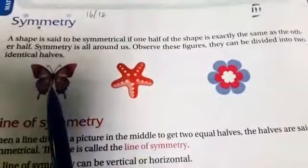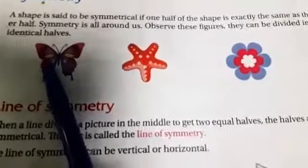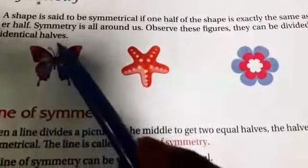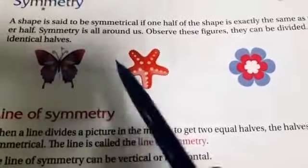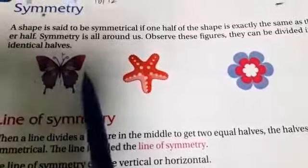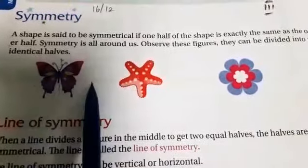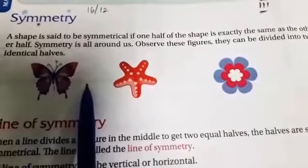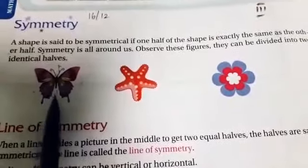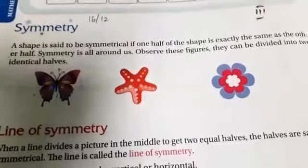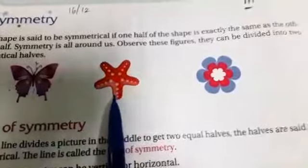Just look at the butterfly picture here. Draw a line down the middle — both sides come to the same half. It's only one half, and the shape comes to exactly the same as the other half, so both sides are equal. That is called symmetrical.